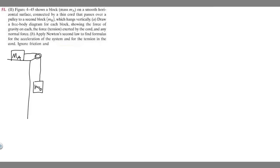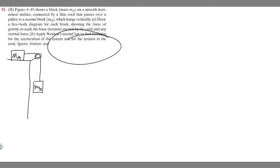In this problem, we're shown a block, mass M sub A, on a smooth horizontal surface connected by a thin cord that passes over a pulley to a second block, M sub B, which hangs vertically. First, draw a free body diagram for each block, showing the force of gravity on each, the force of tension exerted by the cord, and any normal force. Then, apply Newton's second law to find formulas for the acceleration of the system and for the tension in the cord.